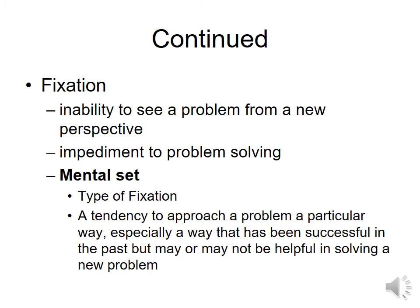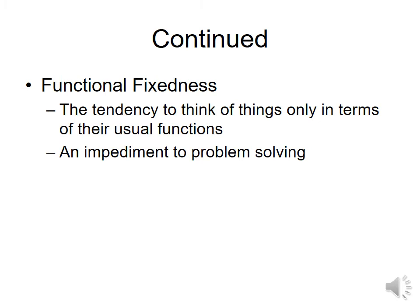Mental sets sound like some things we've already discussed — approaches that become repetitive because they worked before, a lot like heuristics. But a mental set specifically means you cannot see the problem from any other aspect; you're stuck in a mental trap. Functional fixedness is a type of mental set — a tendency to think of physical items only in terms of their usual functions, and this prevents problem solving.